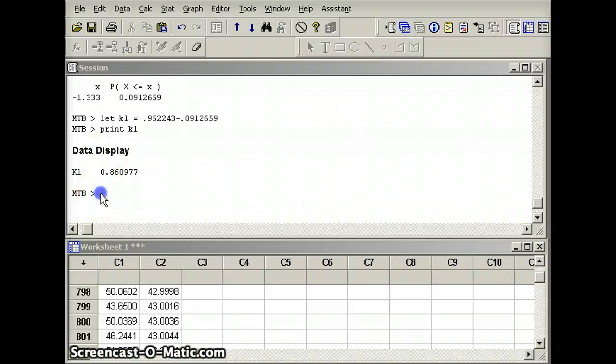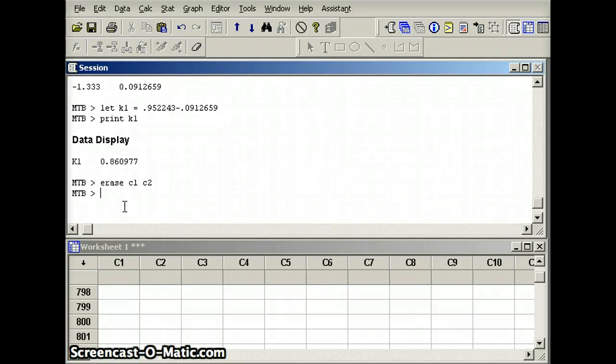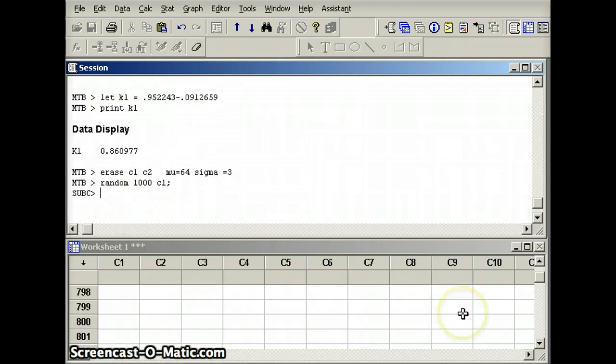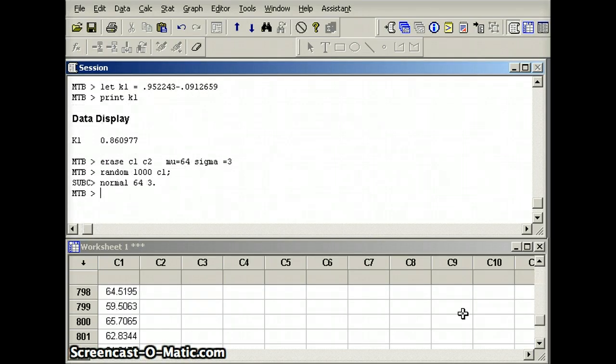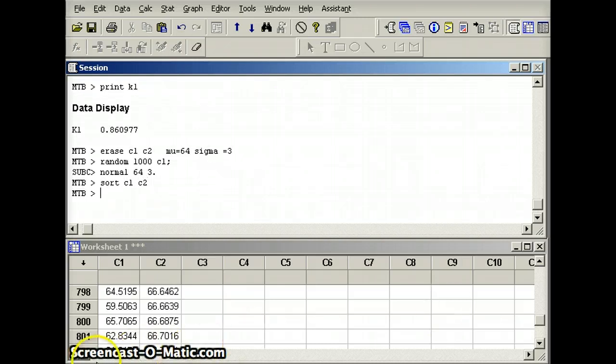I want to erase the data I have here. So I'm going to say erase C1, C2. And then we're going to remember what we had before: mu was 64 and sigma was 3. And we want to generate a data set that will have those characteristics. So I'm going to say random, let's do 1,000 this time, C1, semicolon normal 64, 3 - mean of 64, standard deviation of 3. And I'm going to say sort C1, C2.